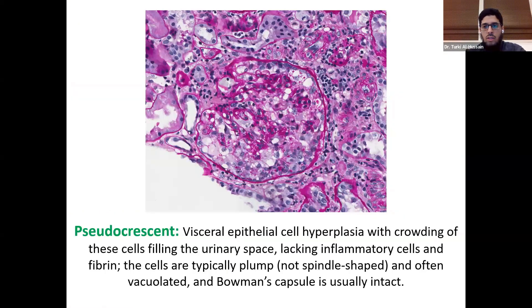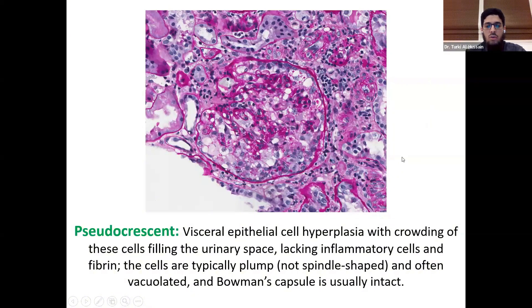It is very important to differentiate a true crescent from a pseudocrescent. Pseudocrescents can be seen in different conditions, most importantly in collapsing FSGS. A pseudocrescent is characterized by visceral epithelial cell hyperplasia with crowding of cells filling the urinary space, lacking inflammatory cells and fibrin. The cells are typically plump, not spindle-shaped, and often vacuolated. The Bowman capsule is usually intact, with no rupture of Bowman's space.